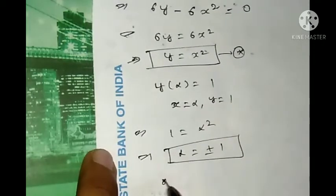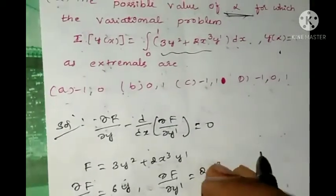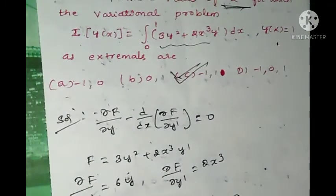α = +1 or -1, therefore the correct answer is option C. Thanks for watching. If you like this video, please like, share, and subscribe to my channel. Thank you.